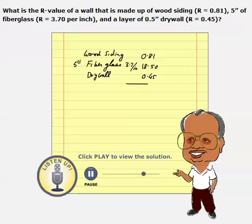When you add all these three layers up, you get a total R value of 19.76. So the answer is 19.76 degrees Fahrenheit foot square hour over BTU. This is the composite R value.